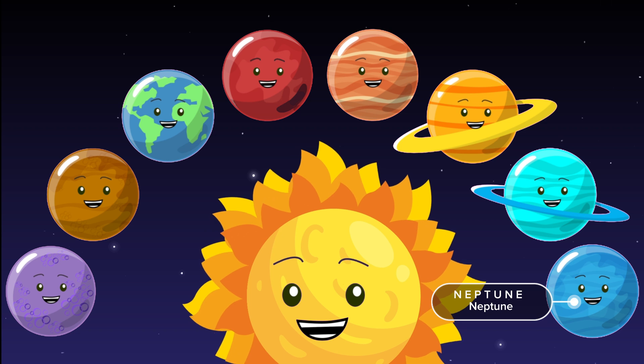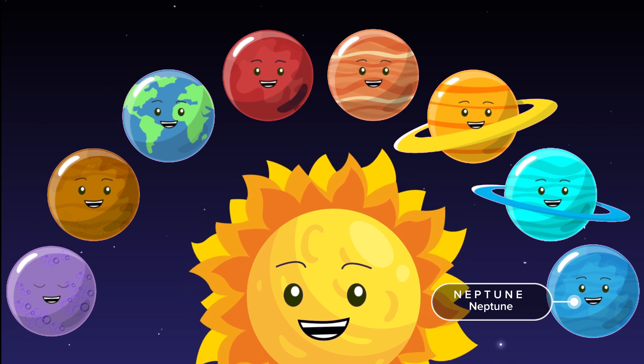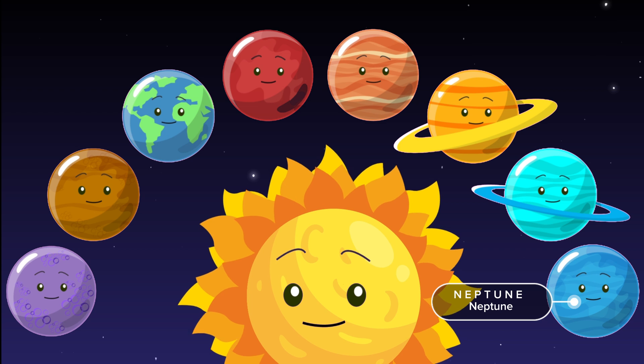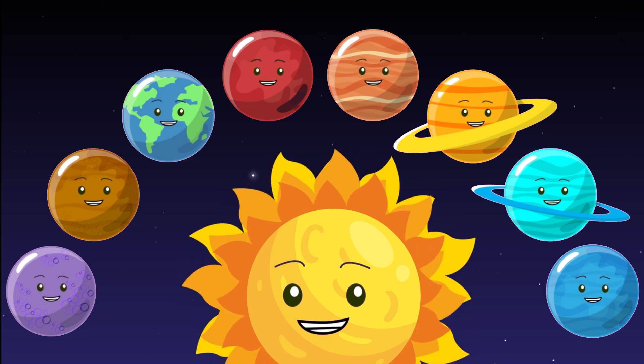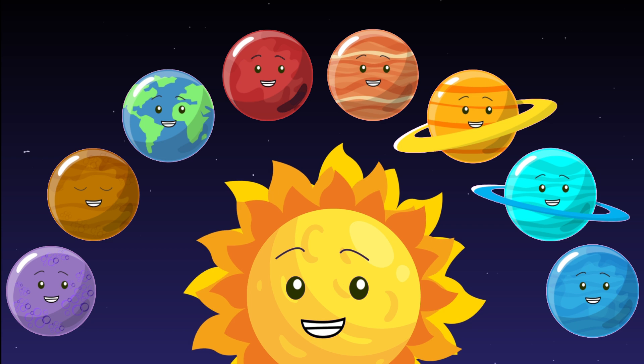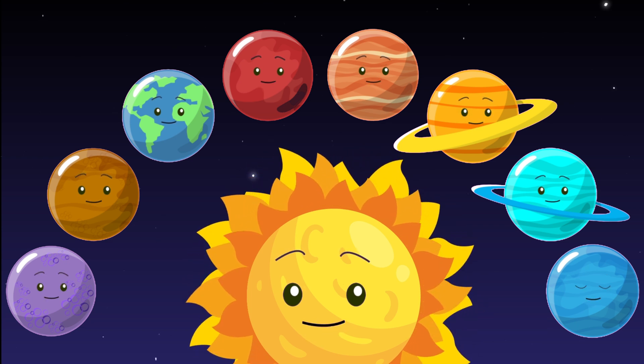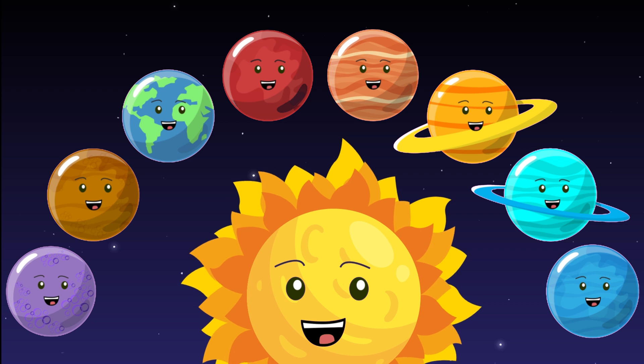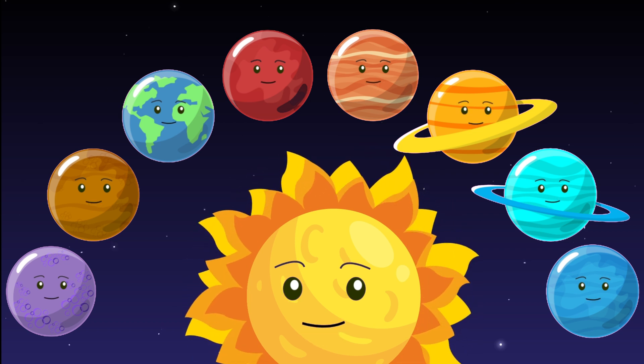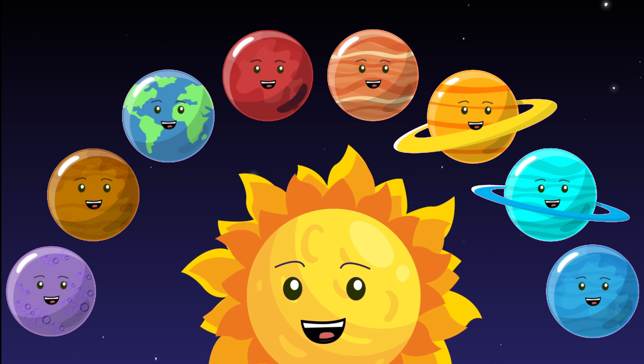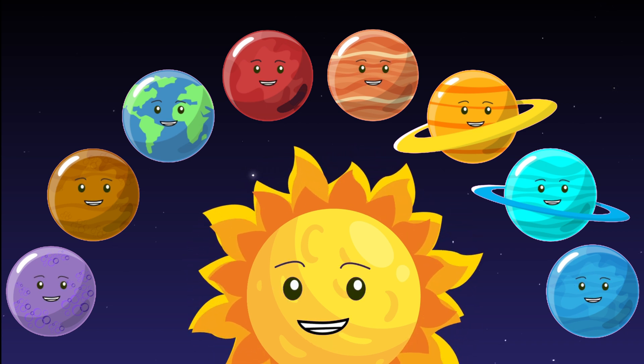N-E-P-T-U-N-E, Neptune. Deep blue storms across the sea. Eight great planets, one by one, they all go round the mighty sun.